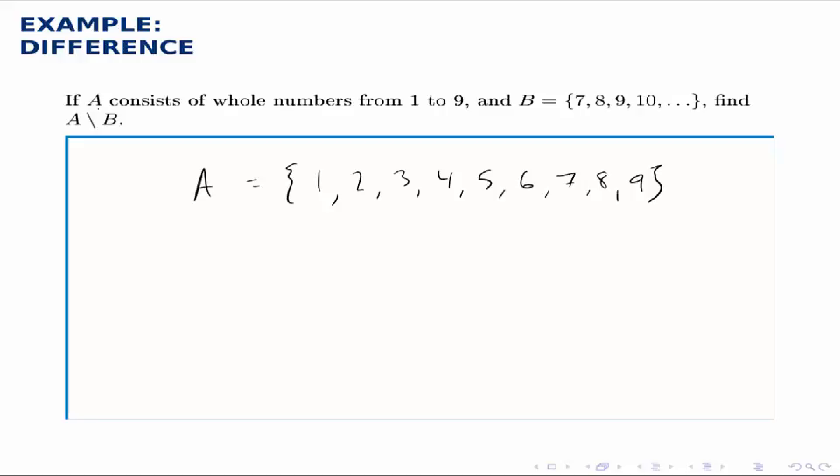To take the set difference, what we do is start with the first set, A, and then take away any elements from A that also appear in B. The only three that we notice are 7, 8, and 9.